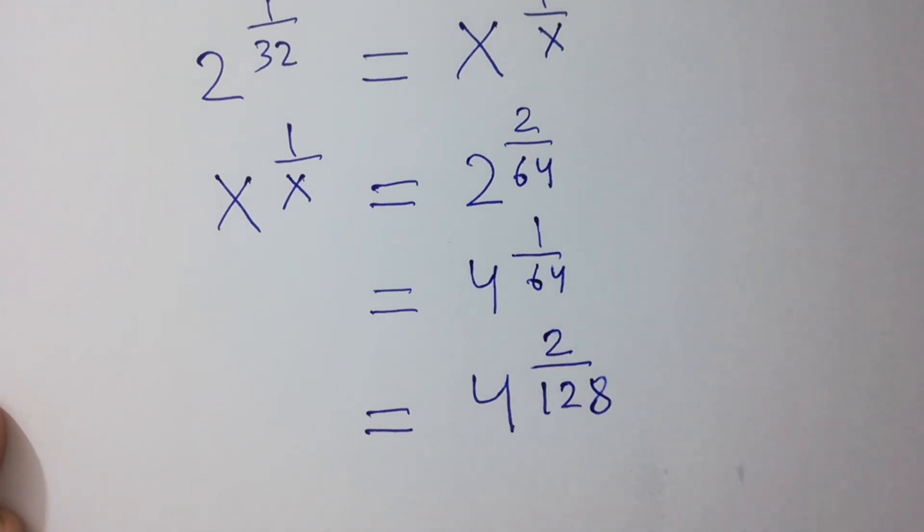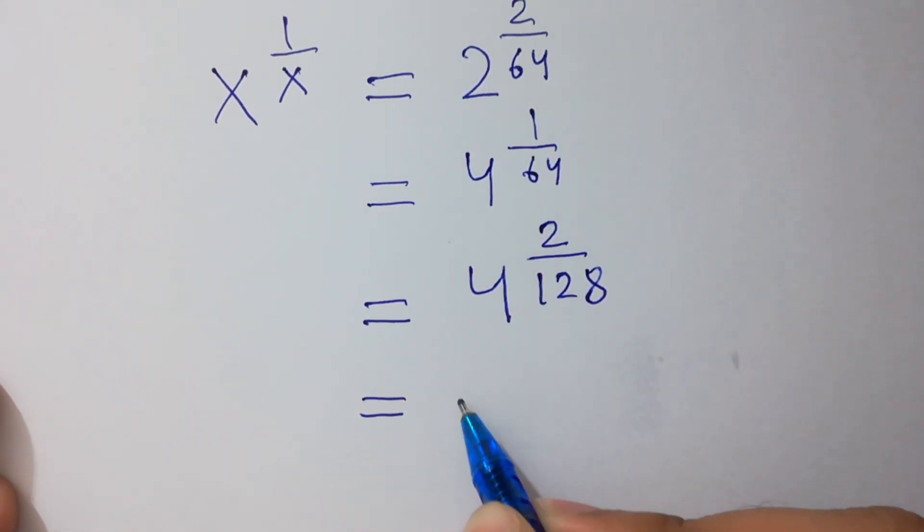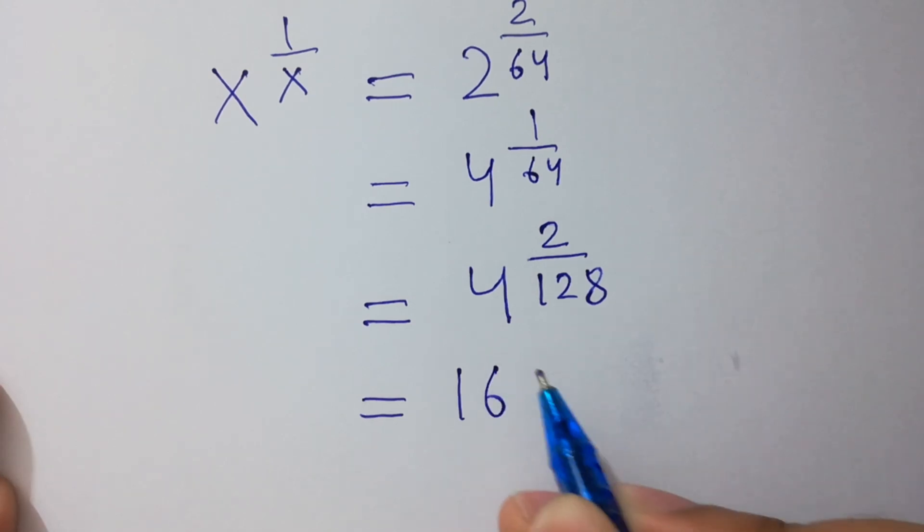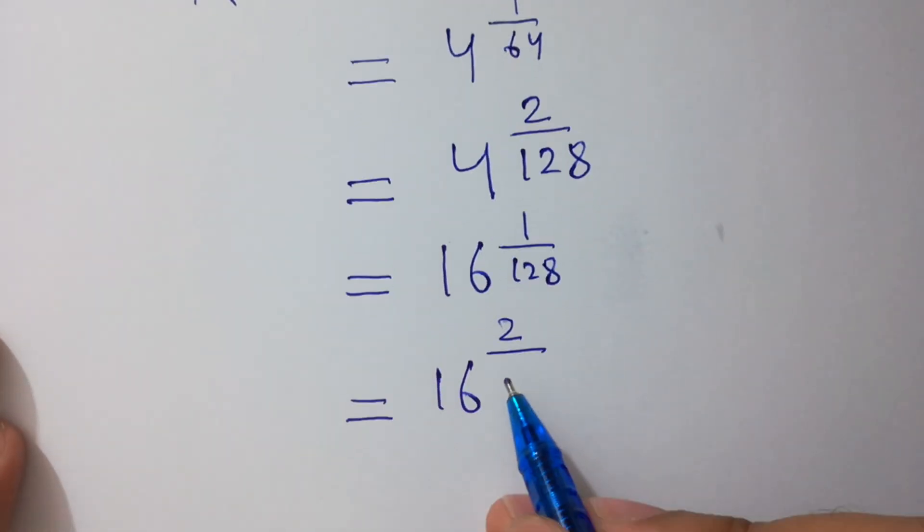Here, 4 squared equals 16 to the power 1 over 128, and 1 over 128 can be written as 2 over 256.